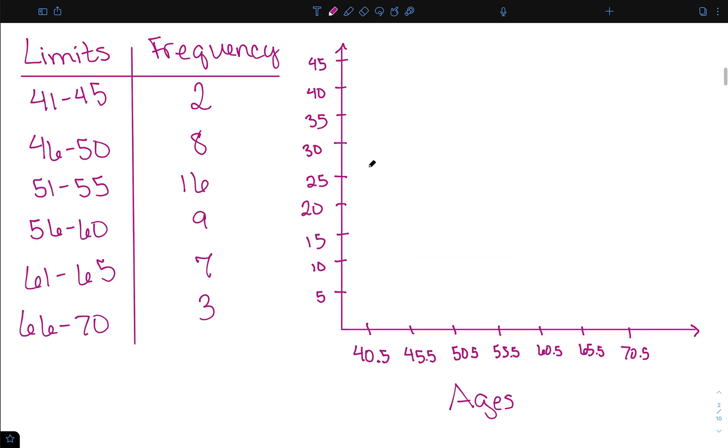Let's once again consider this frequency distribution with the ages of the first 45 US presidents at the time of their inauguration. And I went ahead and labeled my x and y-axis. My x-axis has the class boundaries of 40.5, 45.5, 50.5, etc. My y-axis is going to be for my cumulative frequencies.